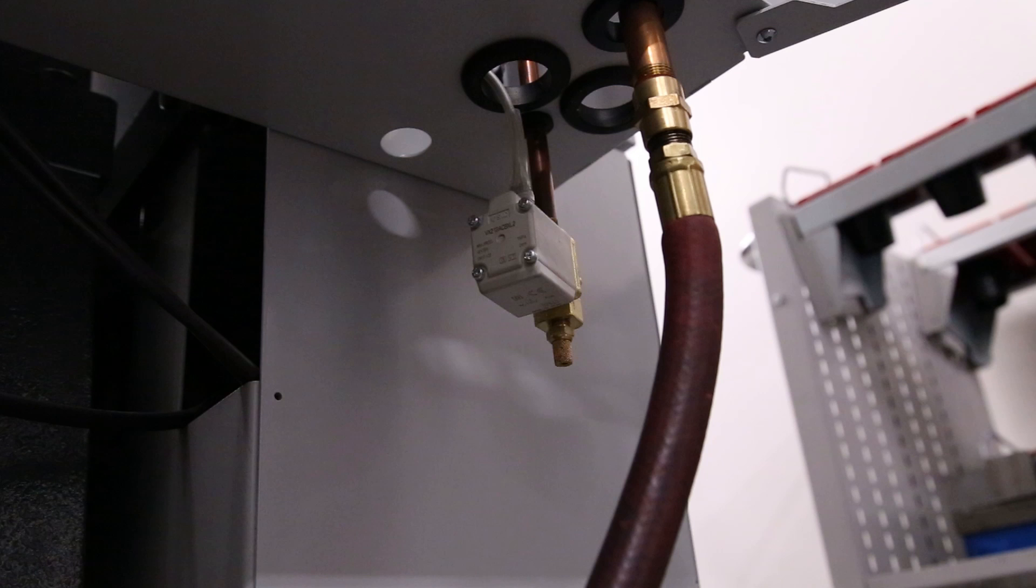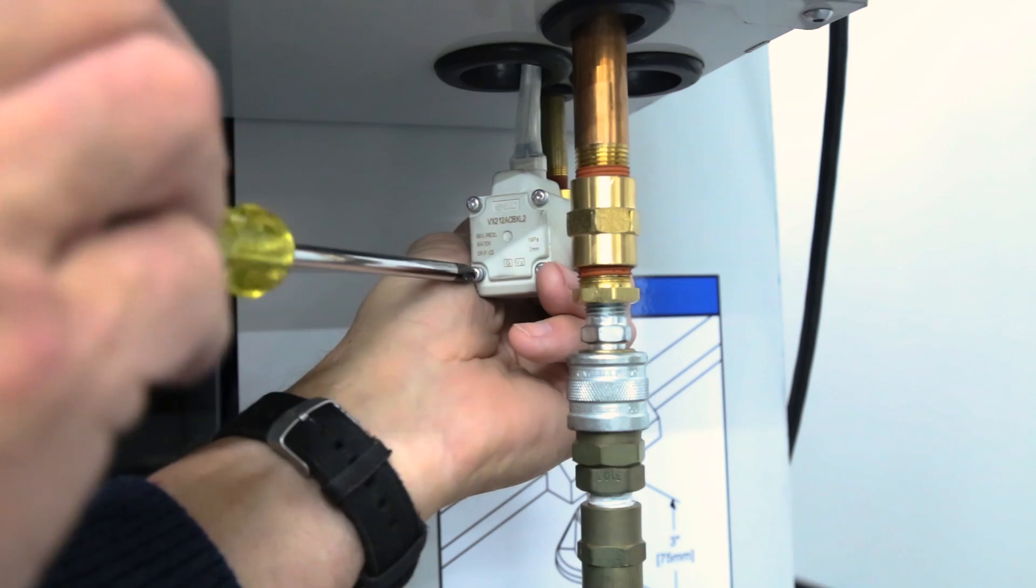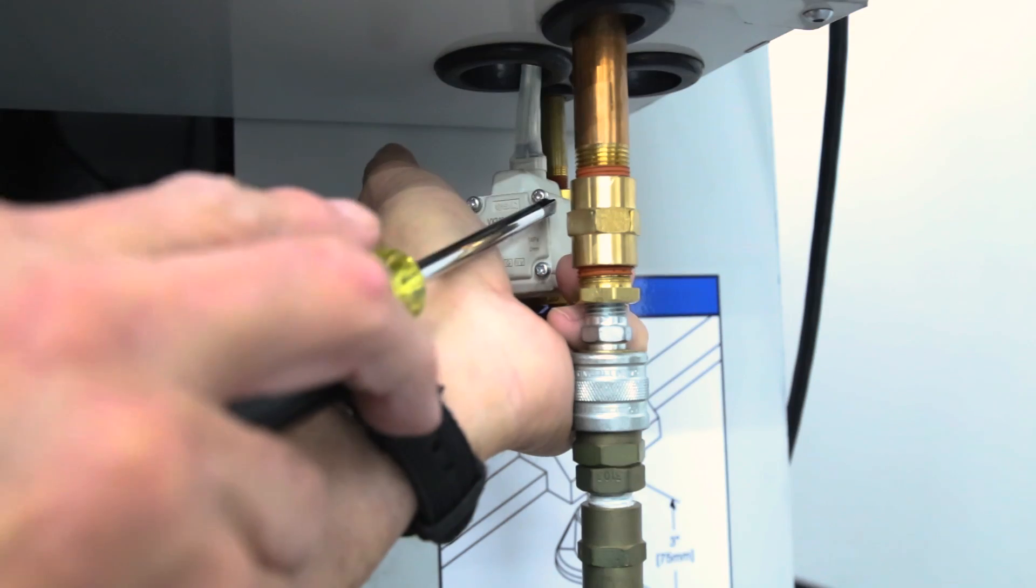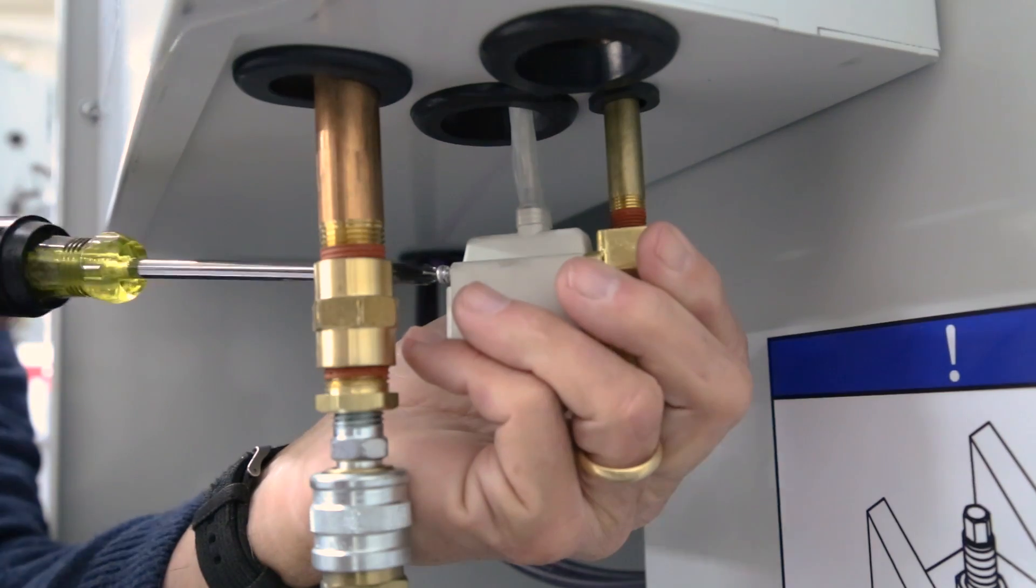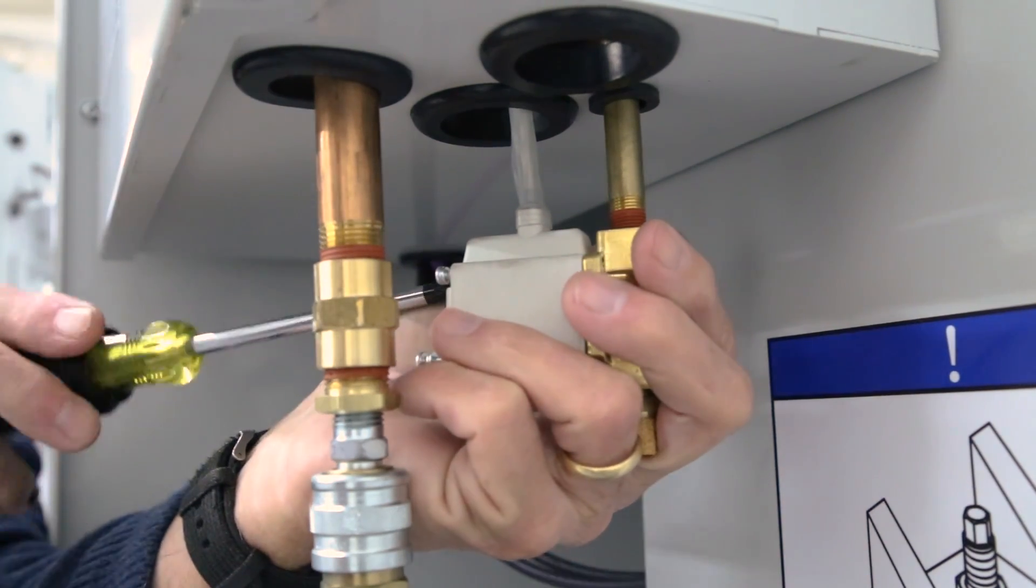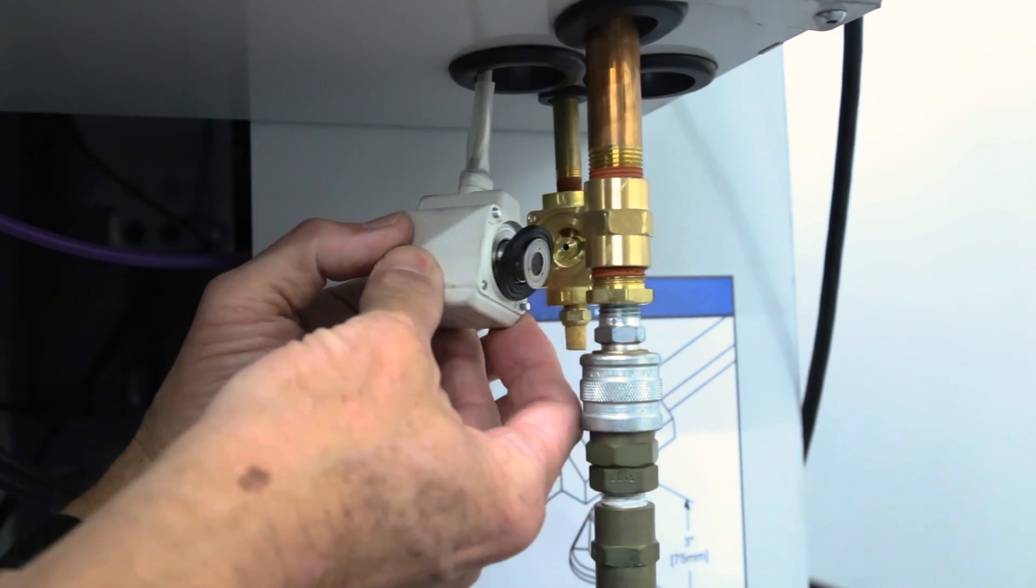You can do this job on the machine without removing the solenoid. Remove the four screws of the coil assembly. As the solenoid is slightly spring-loaded, keep your hand over the brass manifold as you back out the screws. Gently pull the coil assembly away from the manifold.